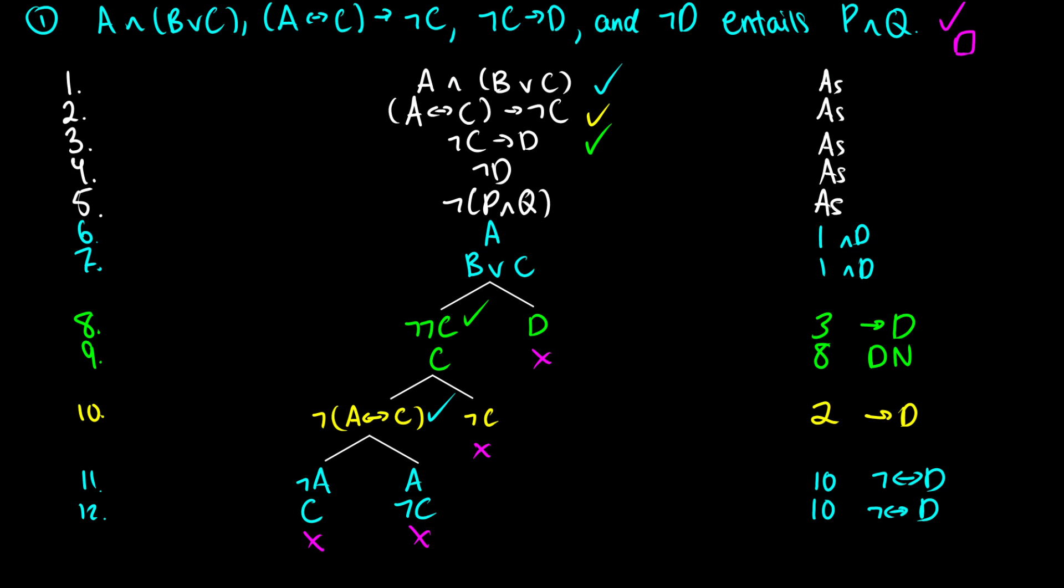We've shown that A∧(B∨C), A↔C→¬C, ¬C→D, and ¬D entails P∧Q. So if you're ever given something absurd like this, where the variables or propositions just don't even show up in the antecedent there, the left side of the entailment, then you're probably definitely going to find a contradiction. So that's the first question. Hopefully that wasn't too bad. Really the difficulty with these problems is setting it up, and then just applying the rules as you did before.